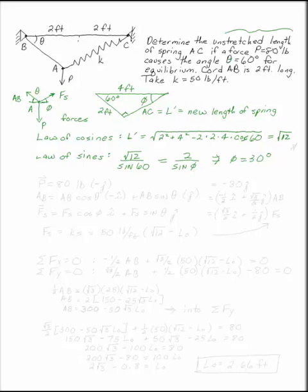Now we know in our free body diagram all of the angles to be able to write our forces in Cartesian form. P is 80 pounds in the negative j direction. AB is whatever its magnitude is times cosine of 60 in the negative i direction, and AB sine of 60 in the positive j direction.